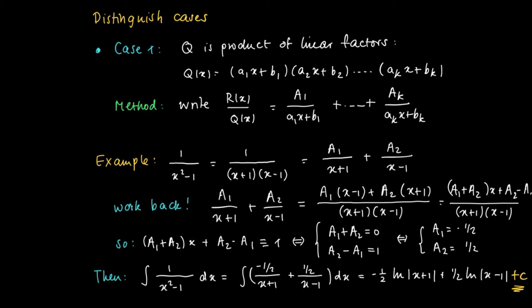So this can be done if we are able to write R(x)/Q(x) as A₁ divided by a linear term plus etc. plus Aₖ divided by aₖx + bₖ. A constant divided by a linear term, then we can easily find the primitives of each of these terms. So we can define a primitive as a sum of all those primitives for R(x) divided by Q(x).